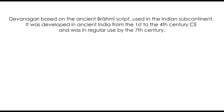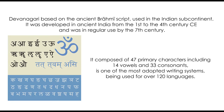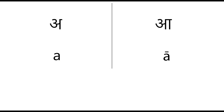In this episode we're going to talk about the alphabet used to write down the Sanskrit language, being the Devanagari script, which is also used for the Hindi language nowadays. Devanagari is based on the ancient Brahmi script, which was developed in ancient India and was in regular use by the 7th century. The Devanagari consists of 47 primary characters, which includes 14 vowels and 33 consonants. Today we're going to talk only about the vowels. An interesting thing about Devanagari is that it is one of the most adopted writing systems, being used for over 120 languages.